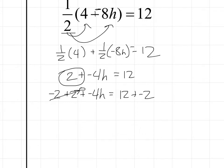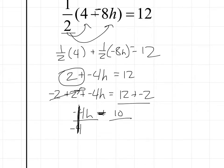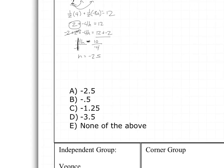0 plus negative 4h is negative 4h, which is equal to — on this side — 10. My multiplicative inverse is to divide or multiply by the reciprocal. This gives me a multiplication of 1. Do the same thing to the other side. That gives me h is equal to negative 2.5, which is answer choice A.